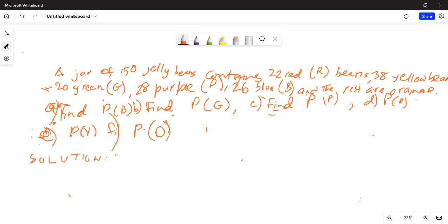So we know there are 150 total. Let's count the number of beans: 22 red plus 38 yellow plus 20 green plus 28 purple plus 26 blue. Use your calculator. 22 red plus 38 yellow plus 20 green plus 28 purple plus 26 blue, total is 134.